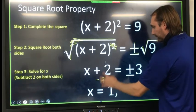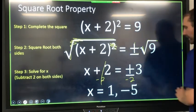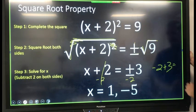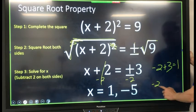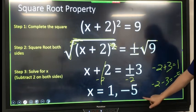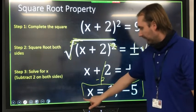And I get x minus 2 plus 3 equals 1. And x minus 2 minus 3 equals negative 5. So I get 1 and negative 5.